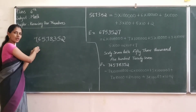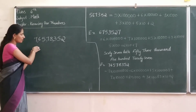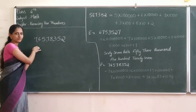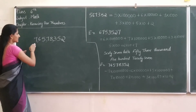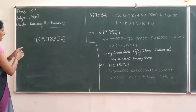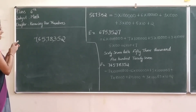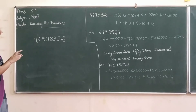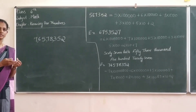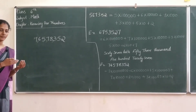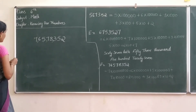Now it is easy to write and read this number: 7,65,78,352. Correct? It is easy, right?